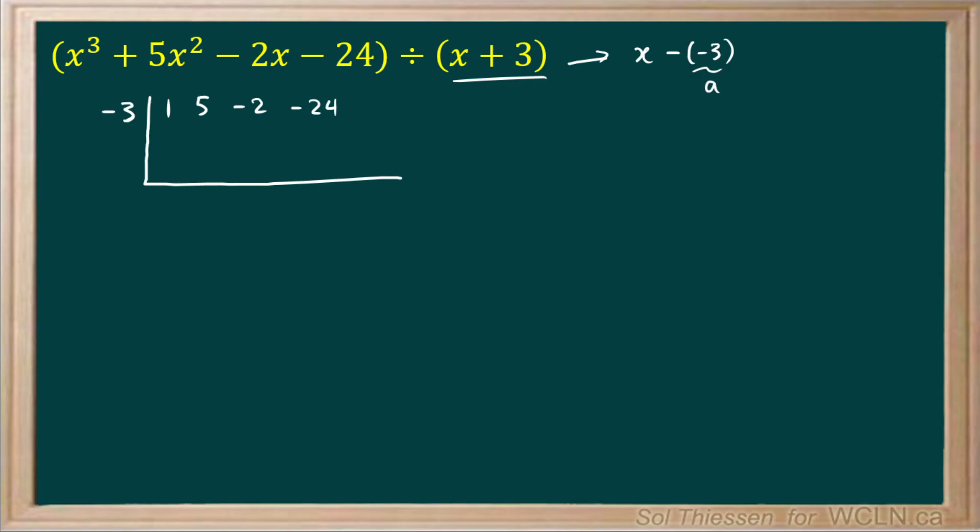Remember the first step to synthetic division is always to bring down the first coefficient. The 1 will just come right underneath the half box symbol. Now I multiply negative 3 by 1, which is going to give me negative 3. I'll write that here. And I have 5 minus 3, which is 2.